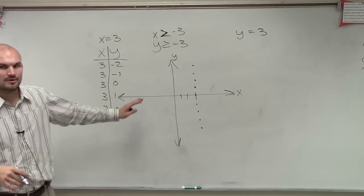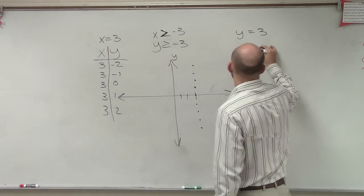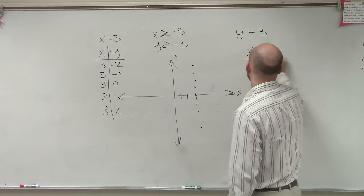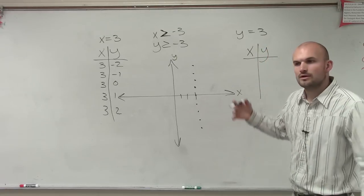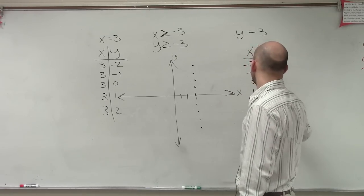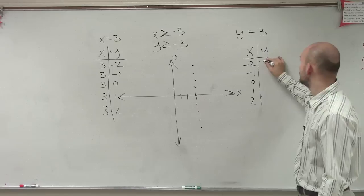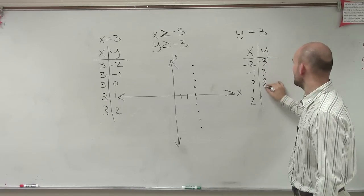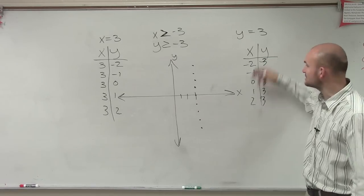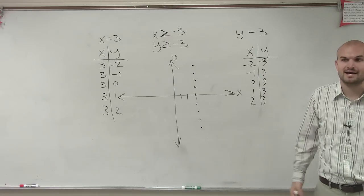Same thing if I do my x and y-coordinate or x and y-table for y equals 3. Let's pretend x is negative 2, negative 1, 0, 1, and 2. What is y always going to be? 3. There's no change in it. It's always going to be 3. So it doesn't matter what the x-coordinate is. It's always going to give me a value of y as 3.